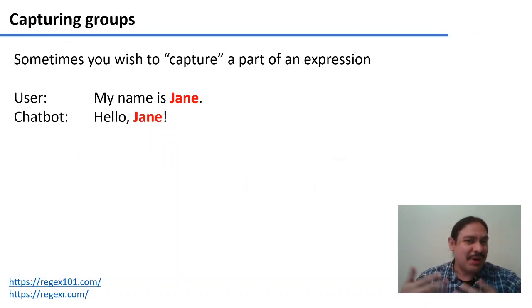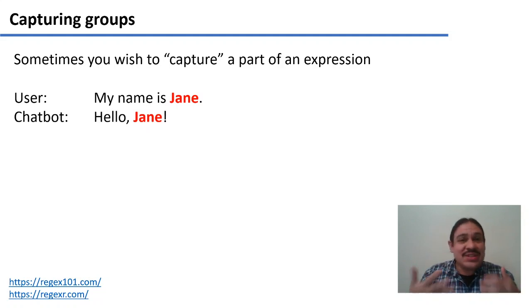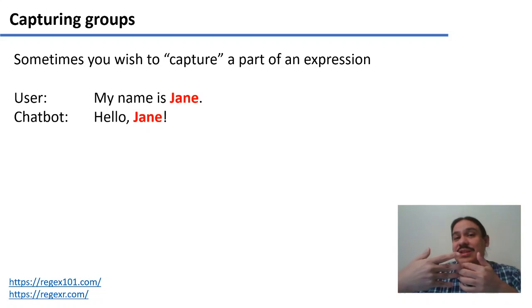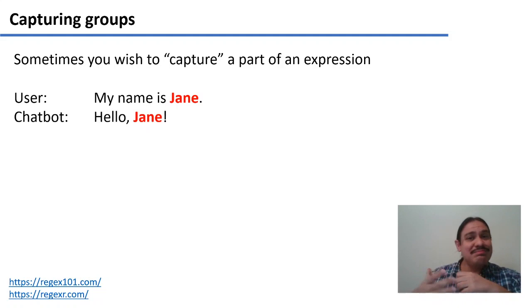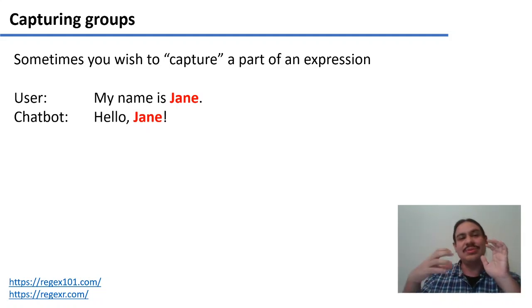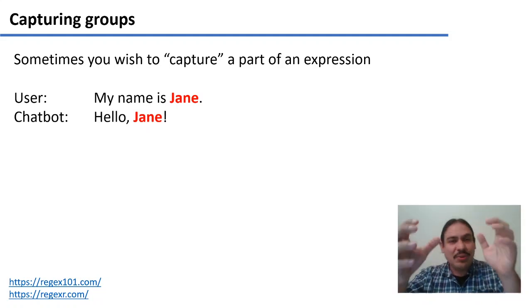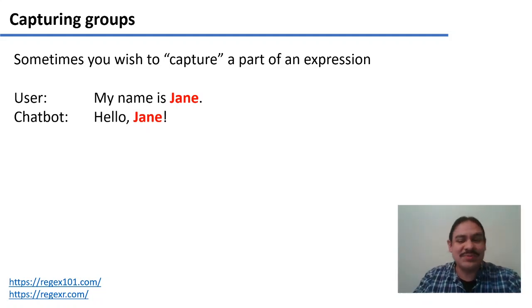Sometimes you wish to capture a part of an expression. For example, if a user is using a chatbot, they might type something like 'my name is Jane.' You might want to respond with 'hello, Jane.' To do this, you need to identify that the person is giving you their name by identifying a string like 'my name is Jane' or 'I am called Jane', and then extract the name from the string so you can use it in your response. Capturing groups help us with this.